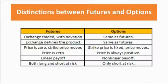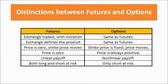We have seen this payoff in our previous videos. In futures, both long and short are at risk, because the market can go in either direction. But in options, only the seller or the writer of an option — who sells this right to the buyer — is at risk. The buyer has only limited loss, limited to the premium, but has potentially unlimited upside.